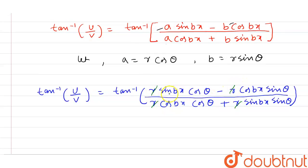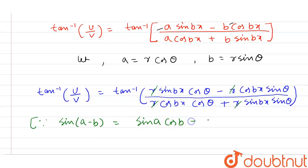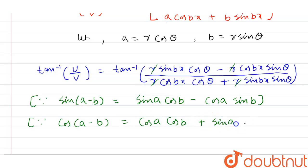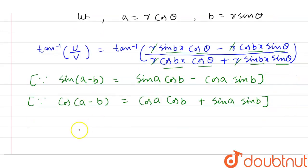Here r cancels out. We are left with sin(bx) cos(θ) minus cos(bx) sin(θ) over cos(bx) cos(θ) plus sin(bx) sin(θ). We know that sin(A − B) equals sin A cos B minus cos A sin B, and cos(A − B) equals cos A cos B plus sin A sin B. Applying these rules here.